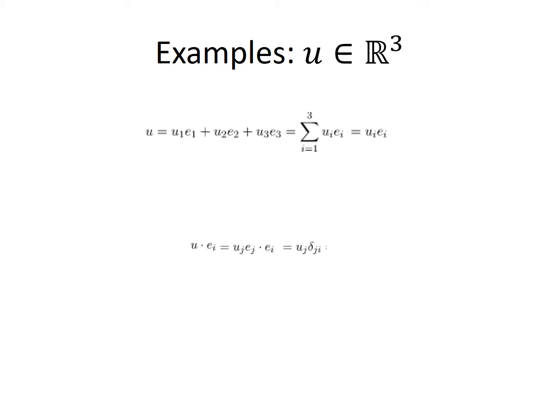So we are left with uⱼδⱼᵢ. There is a summation implied over j, however, δⱼᵢ is zero for all values of j that are not equal to i. Therefore this expression will yield uᵢ.